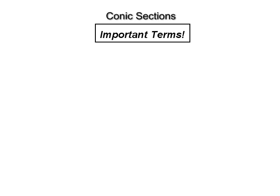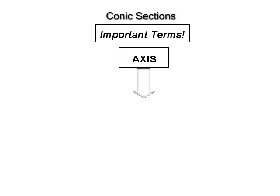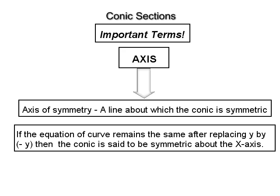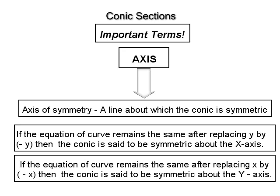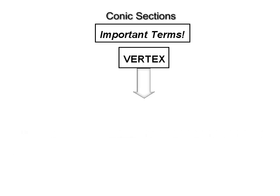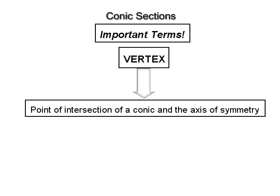A few important terms: Number 1, Axis. The axis of a conic is the axis of symmetry, that is, a line about which the conic is symmetric. If the equation of a curve remains the same even after replacing y by minus y, then the conic is said to be symmetric about the x-axis. If the equation of a conic remains the same after replacing x by minus x, then it is symmetric about the y-axis. Number 2, Vertex. The point of intersection of a conic and the axis of symmetry is called the vertex of a conic.